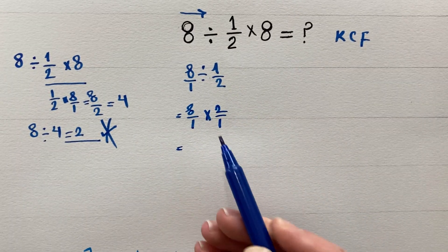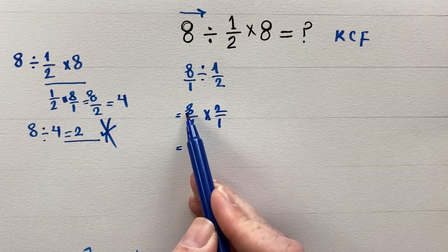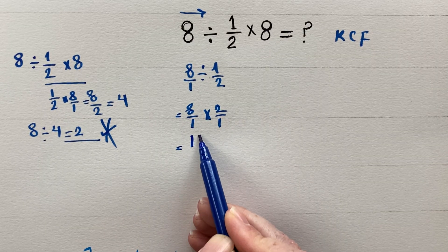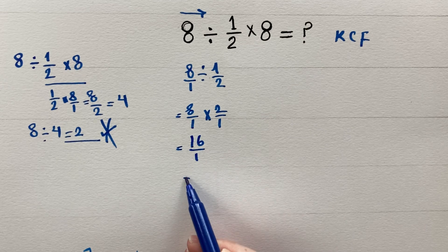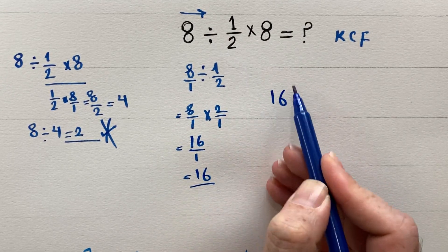Now multiplication of two fractions: 8 times 2 is 16 over 1, that is 16. Now 16